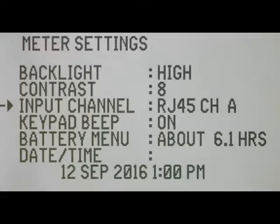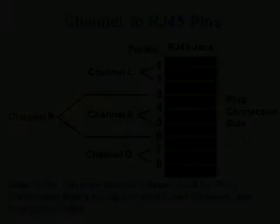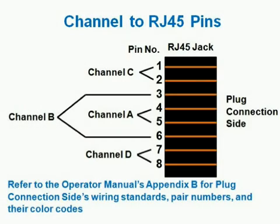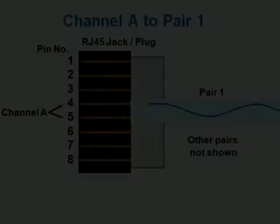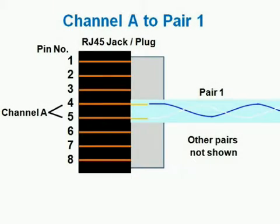Next, use the input channel option in the meter menu to select a pair to measure. The E2020 TDR uses channels A, B, C, and D to avoid confusion between the test pairs reference and that of the different wiring standards. Refer to the Operator's Manual Appendix B for a more detailed guide to the standards, pins used, pair numbering, and wire color codes. I'll use channel A, which are the center 2 pins, and connects to pair 1, the blue-white pair, for both TIA's 568A and 568B wiring standards.